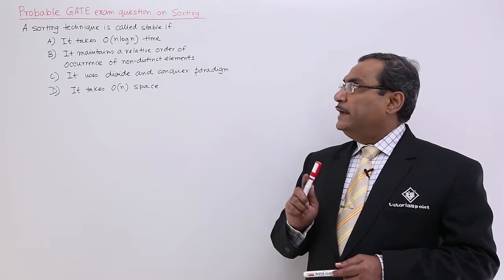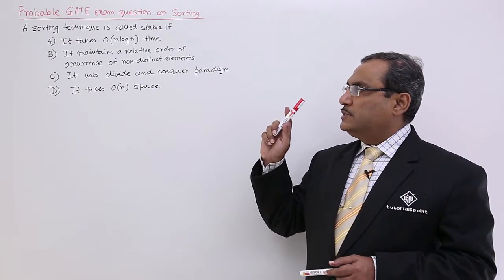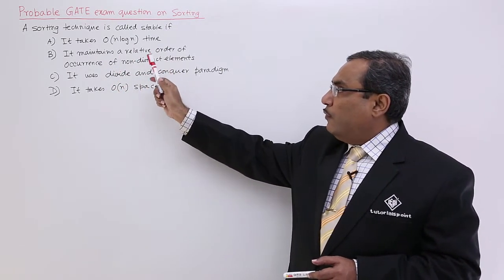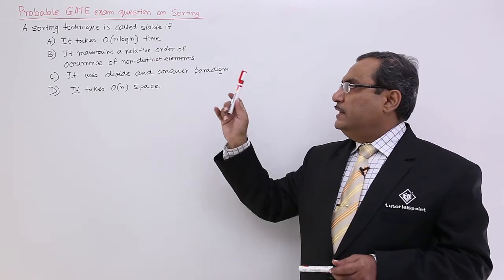Always remember, by definition, a sorting technique will be called stable if it maintains a relative order of occurrence of non-distinct elements. So, it is coming by definition.